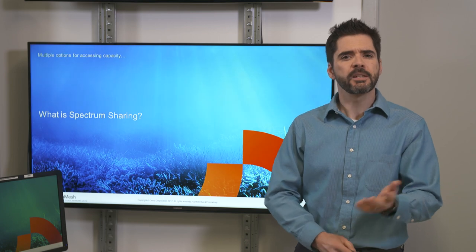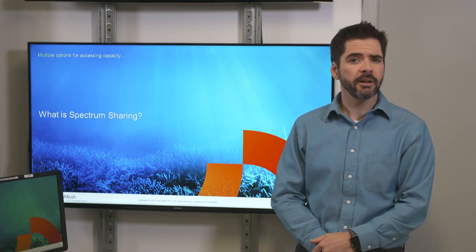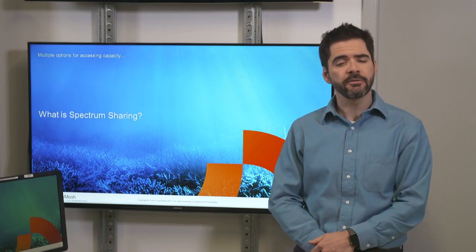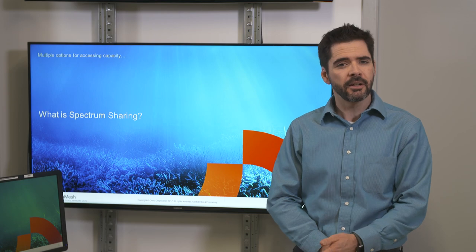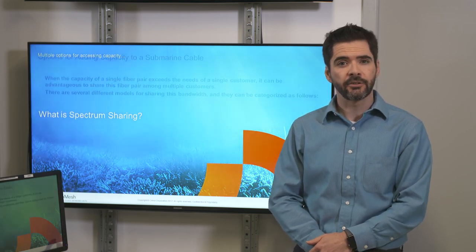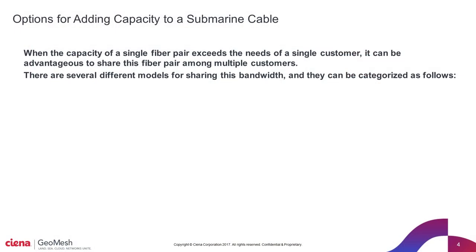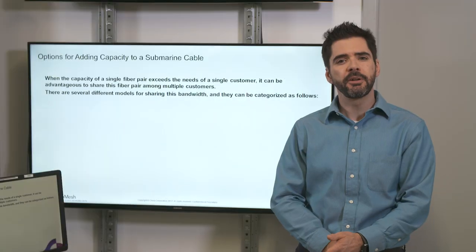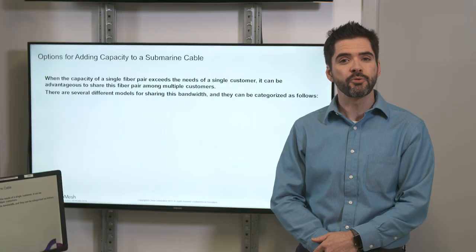So what is spectrum sharing? Spectrum sharing is one option for accessing traffic capacity in a submarine cable. When the capacity of a single fiber pair exceeds the needs of a single customer, it can be advantageous to share this fiber pair among multiple customers. There are several different models for sharing this bandwidth, and we will briefly look at each one.